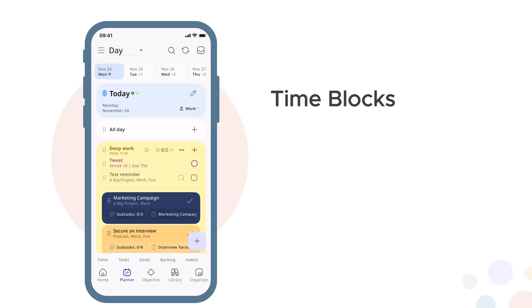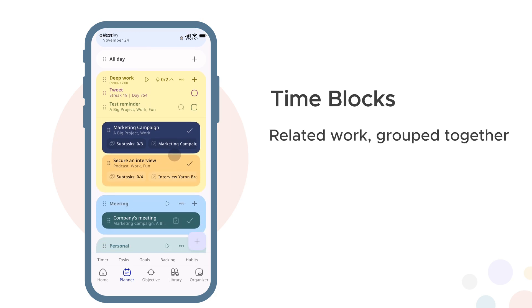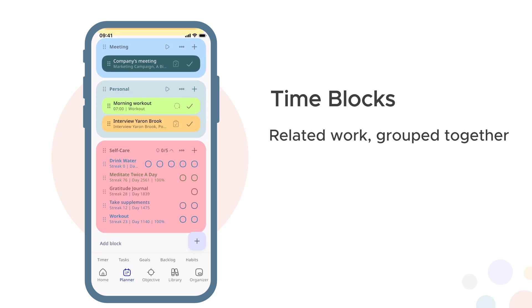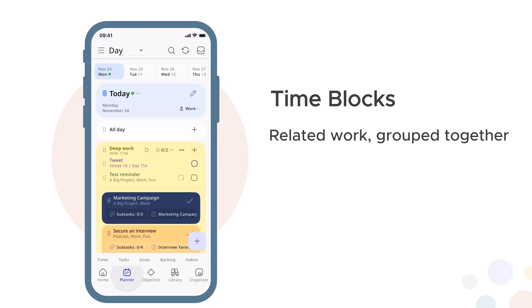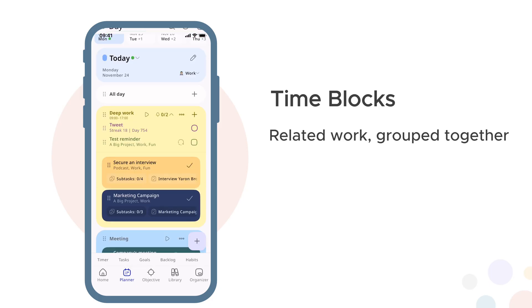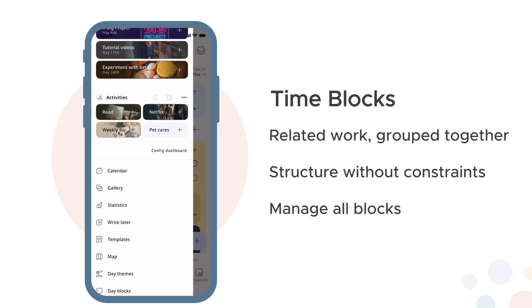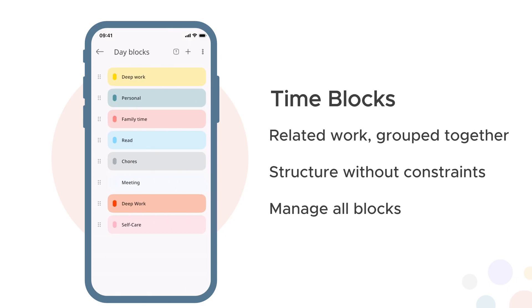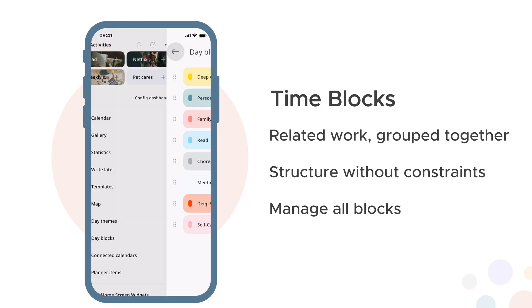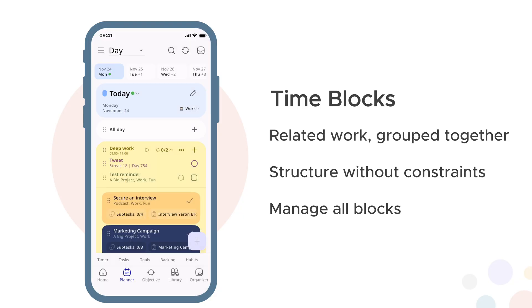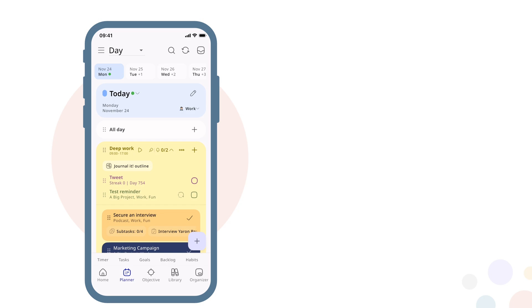Time blocks are containers for related work — deep work, meetings, personal, self-care. Each block groups related items together, giving your day visual structure. The blocks organise your day without constraining it. Remember, they can have multiple time ranges, shift around or have no time at all. To see and manage all your time blocks, open the side panel and tap time blocks. This shows your complete blocks list, where you can create new ones or edit existing blocks.